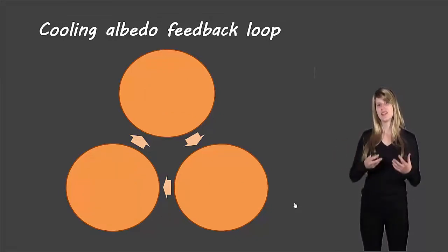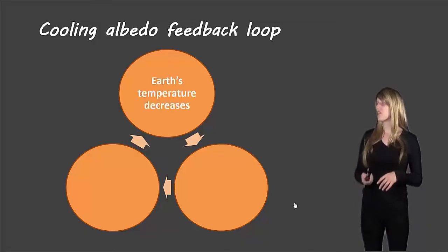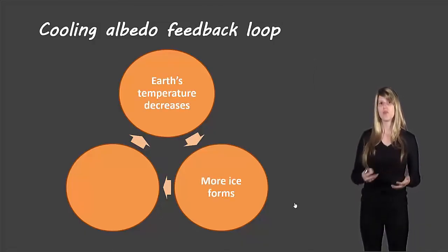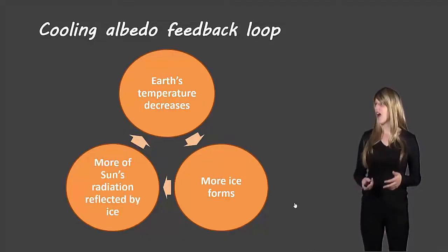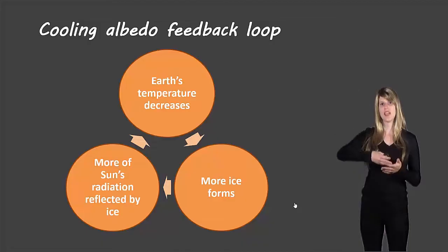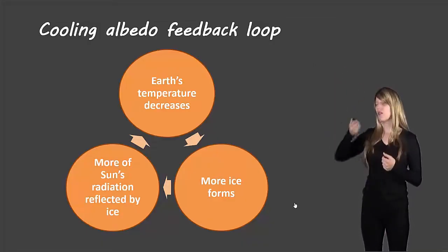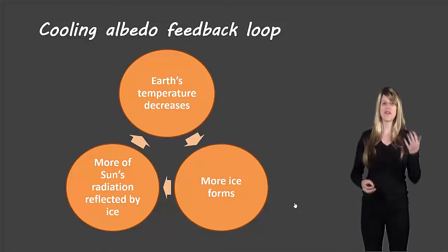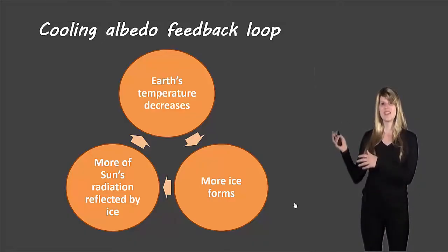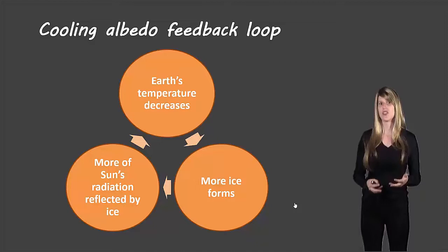Let's take a look at the cooling loop. This is almost just the opposite. If the Earth's temperature decreases, then you're going to have more ice and snow forming. If there's more ice and snow, they have a higher albedo, so more of the sunlight is reflected, less is absorbed to heat up the Earth, which means the temperature is going to decrease, more ice and snow form, and so on. Those are the two feedback loops. The cooling feedback loop you might see during an ice age. That will be a typical situation for a cooling feedback loop.